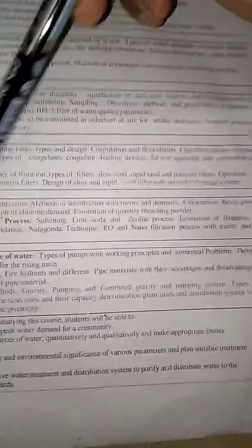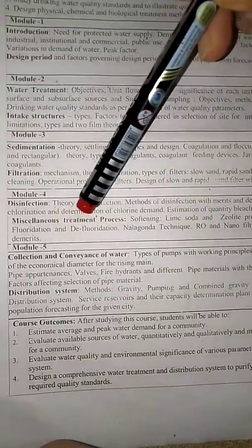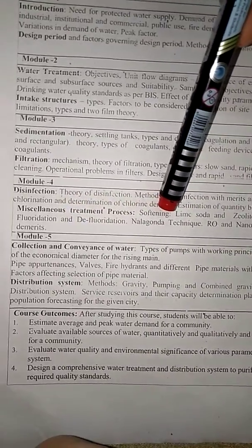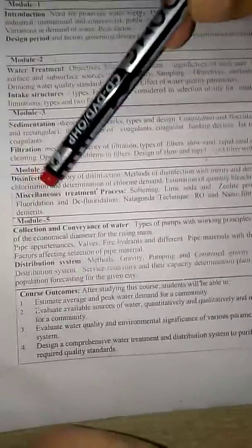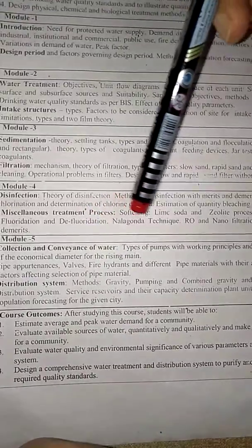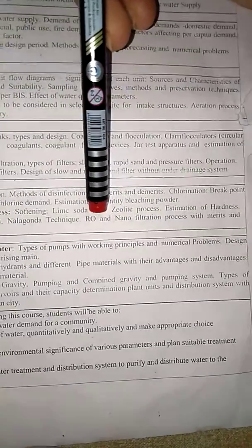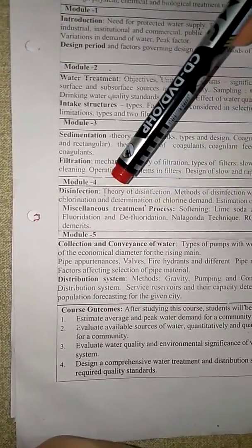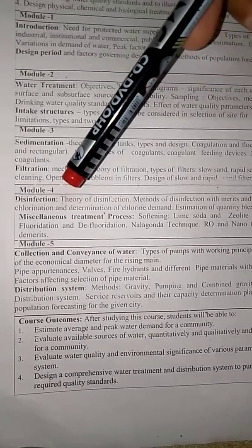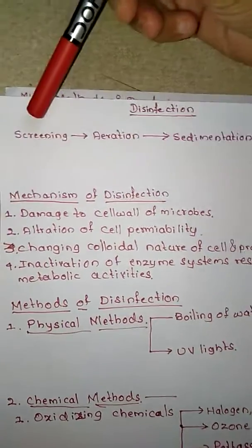After disinfection, we will look at estimation of the quantity of bleaching powder required. Then we will cover miscellaneous treatment processes, including softening by lime-soda and zeolite process, estimation of hardness, fluoridation and defluoridation using the Nalgonda technique, and RO and nanofiltration processes with their merits and demerits.